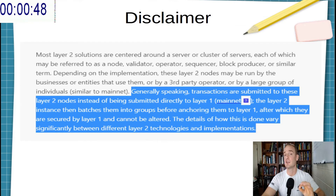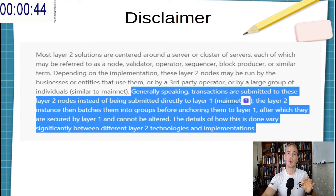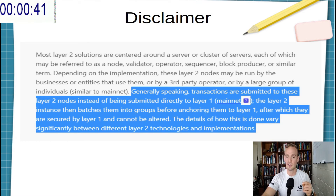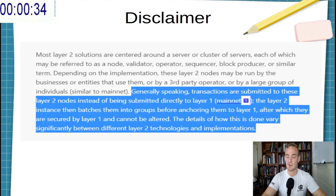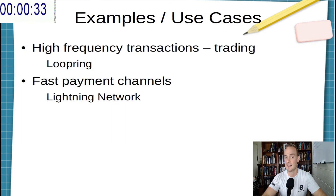Different off-chain solutions will implement this in different ways, so this is more of a general explanation. You can see this here, provided by Ethereum.org, where they explain that transactions are processed off-chain, bundled, and then sent back to main net.